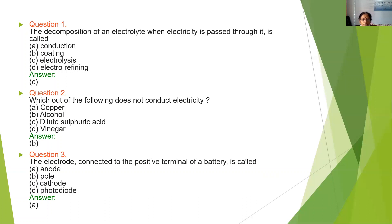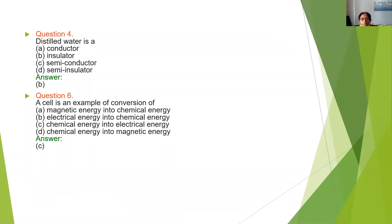The electrode connected to the positive terminal of the battery is called — it is called the anode. So the answer is anode. Distilled water — is it a conductor, insulator, semiconductor, or semi-insulator? We know that distilled water does not conduct electricity, so it is an insulator. The answer is insulator.